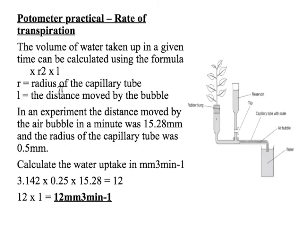Just to make that clear: it should be a divide, not a times, because it's per minute. So 12 millimetres cubed — that's how much air was lost — divided by the time, which was 1 minute. So 12 divided by 1 is 12 millimetres cubed per minute.